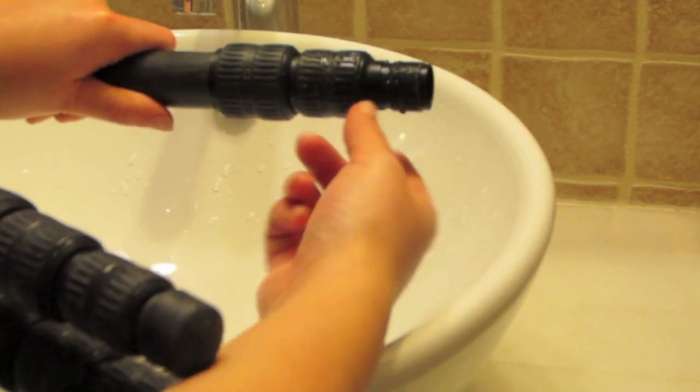take your silicone grease, just a little dab of it and start spreading it all around the threads.